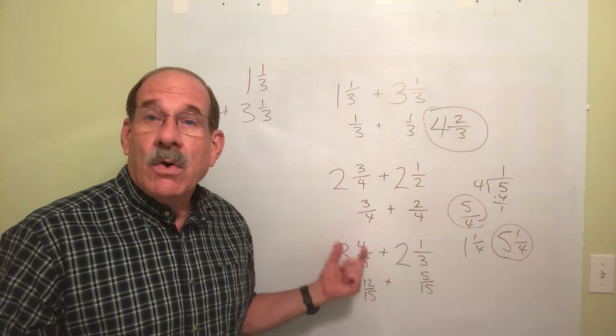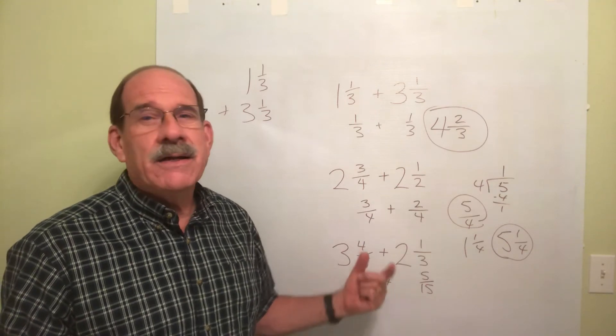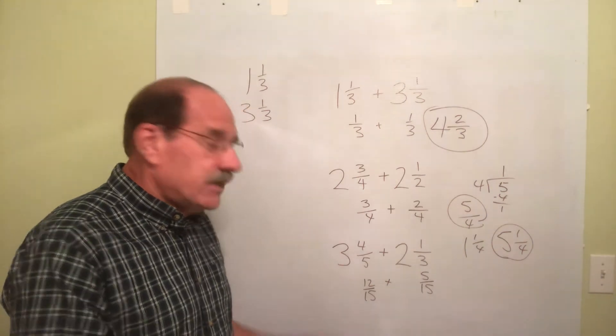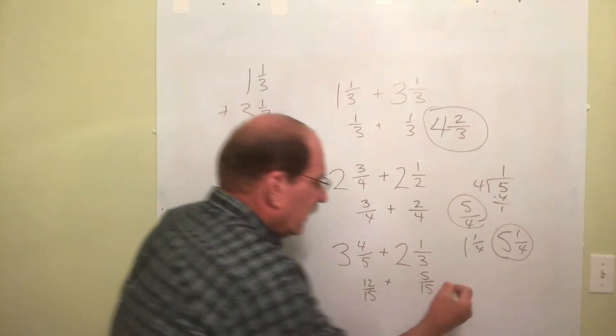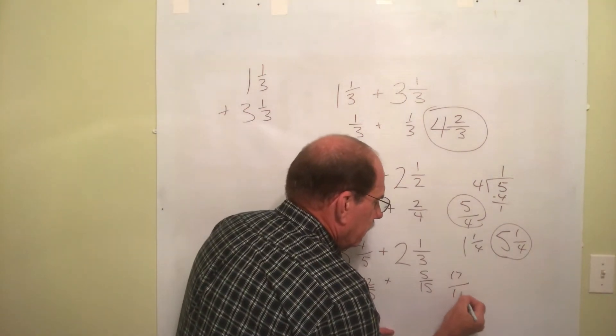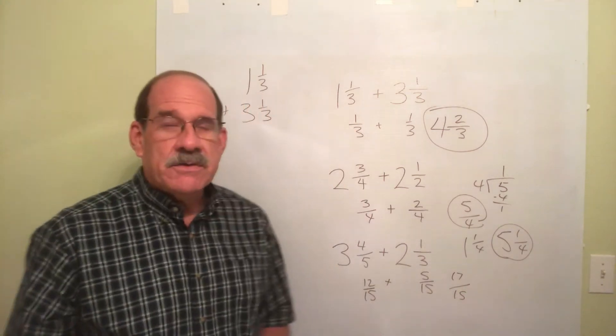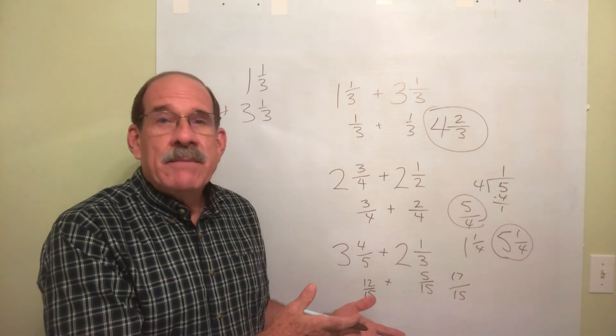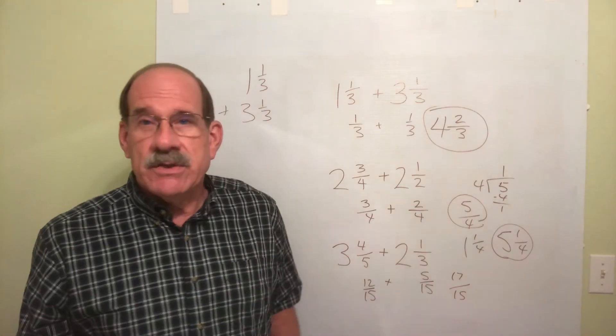Ignore the whole numbers. You're getting tired of hearing me say all this, but that's the way it is. What's 12 plus 5? Well, this becomes 17 fifteenths. But now again, I can't leave it that way. I must convert that into a mixed number.